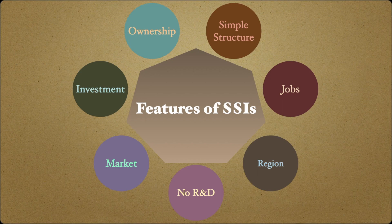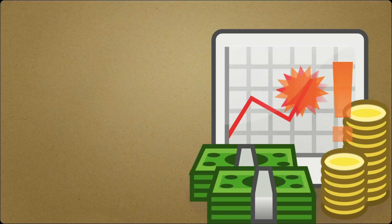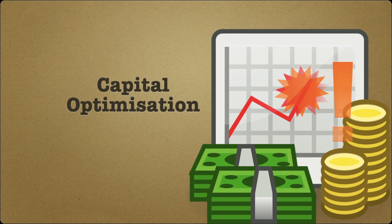Small scale industries play some major roles in economic development. Starting with capital optimization — you need very less capital and also get quick returns. This quick return is possible because you can quickly start an industry and produce goods, meaning there is a small gestation period.